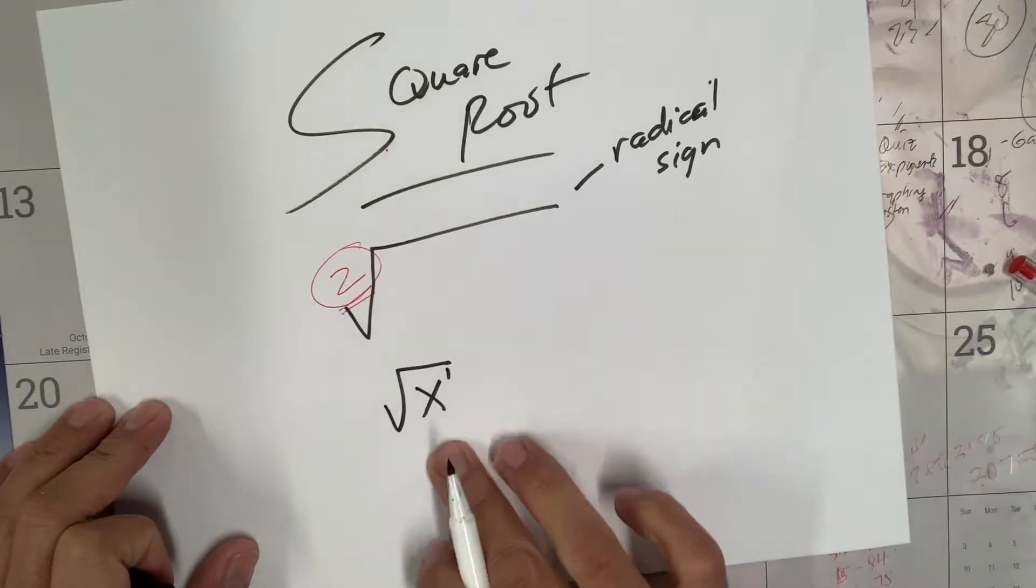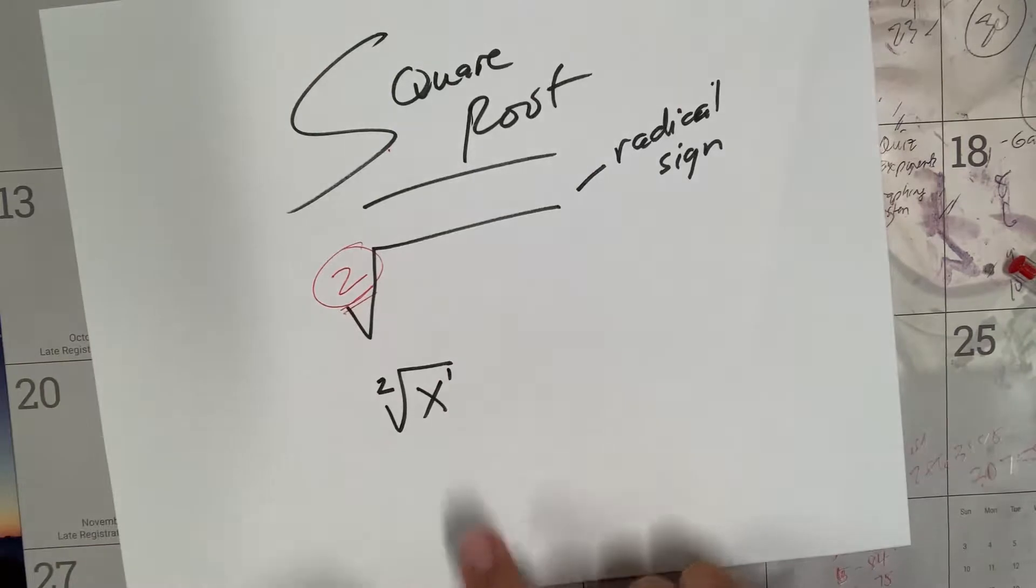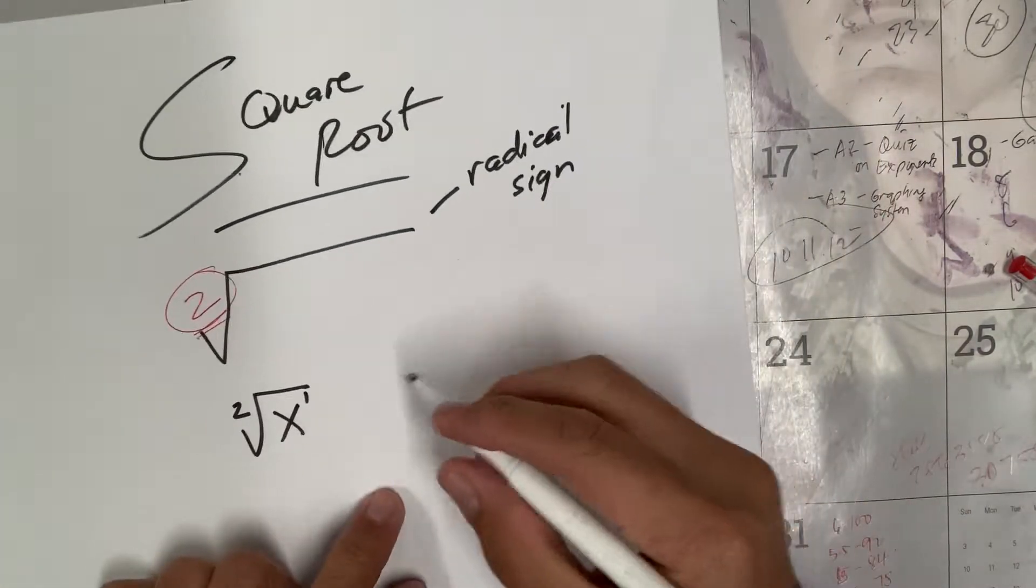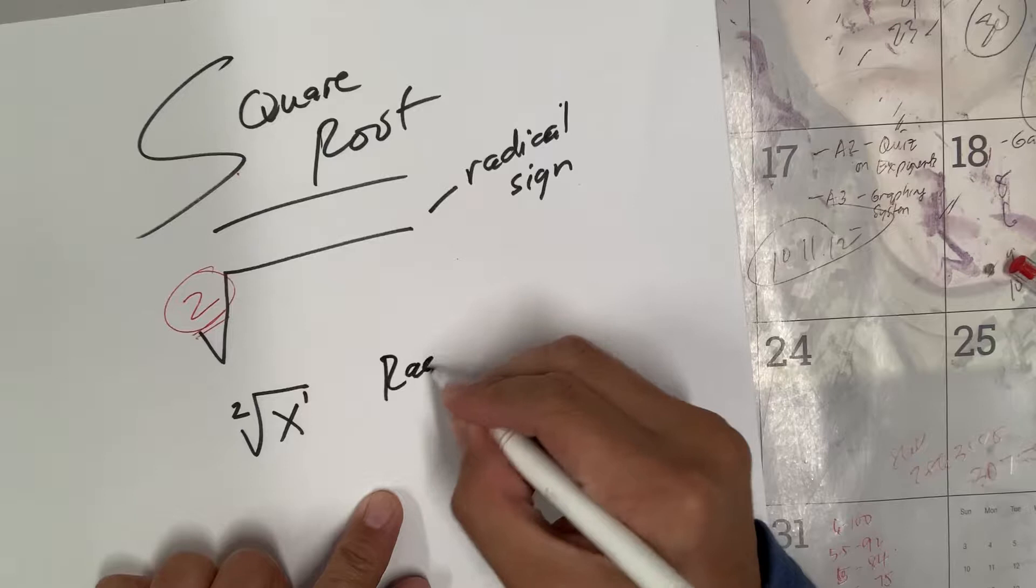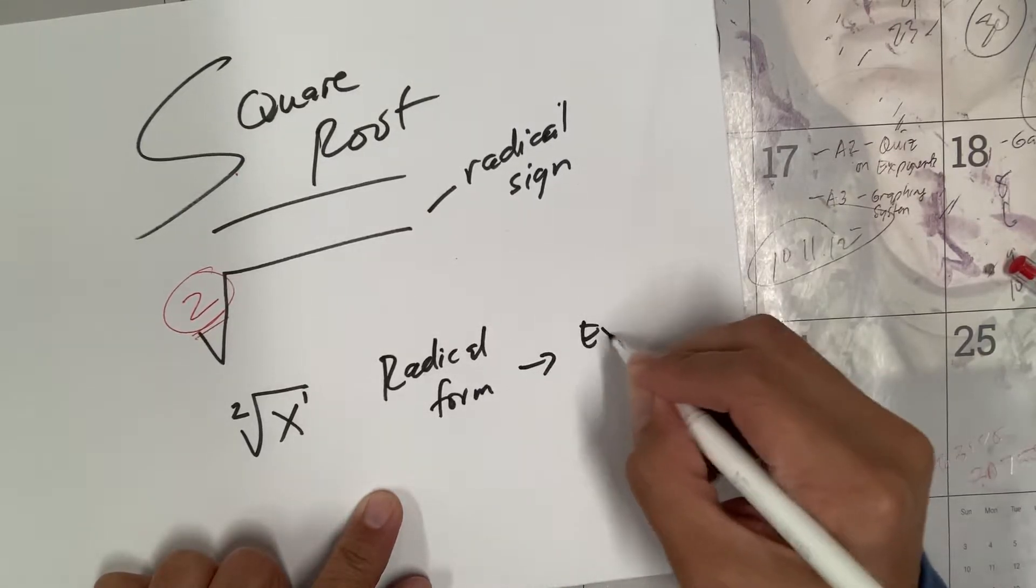If you see them, you're probably hungry. But anyway, we're going to learn about writing radical form into exponential form and vice versa. So how do you do it?